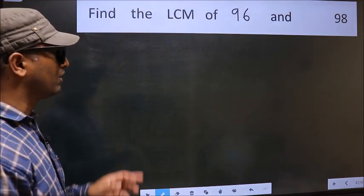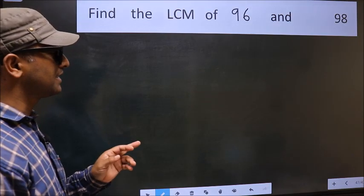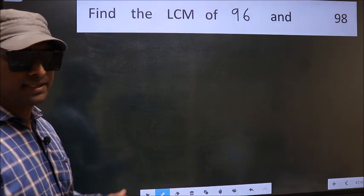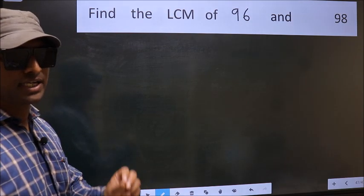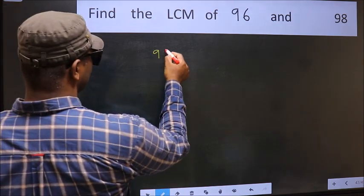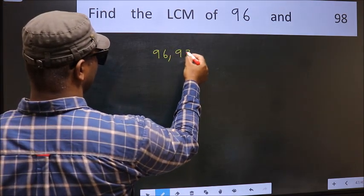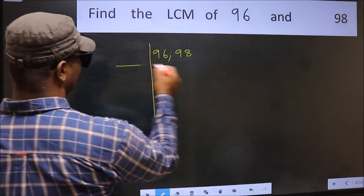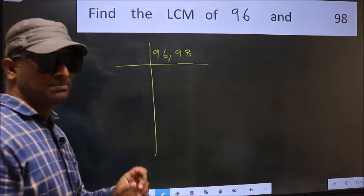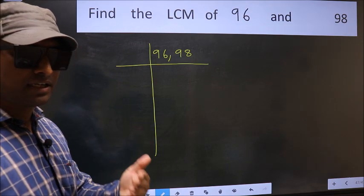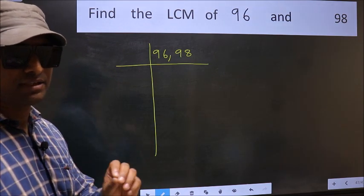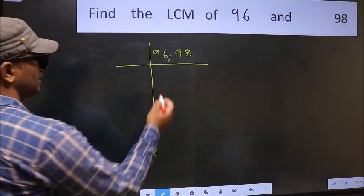Find the LCM of 96 and 98. To find the LCM, we should frame it in this way. Write 96 and 98. This is your step 1. Now you should focus on the first number, which is 96 here.